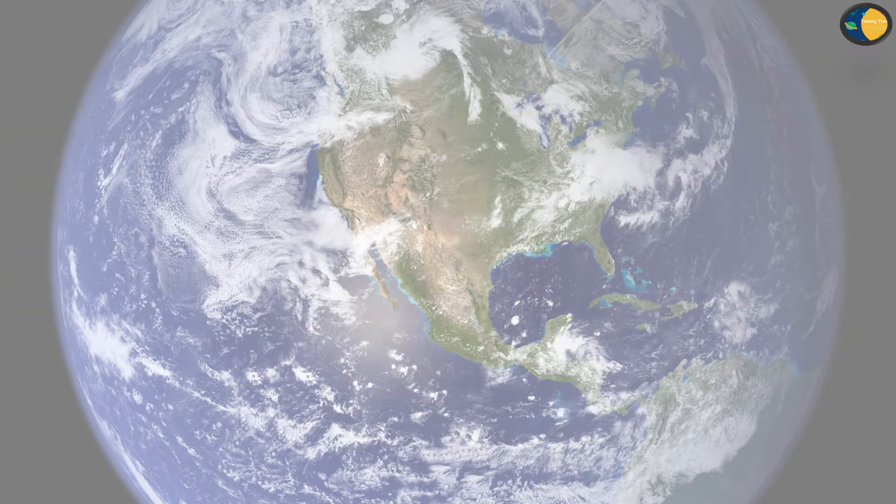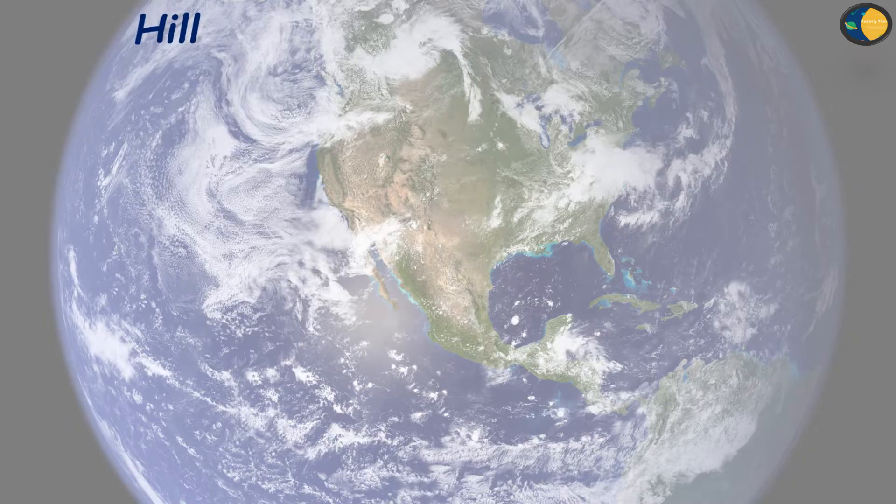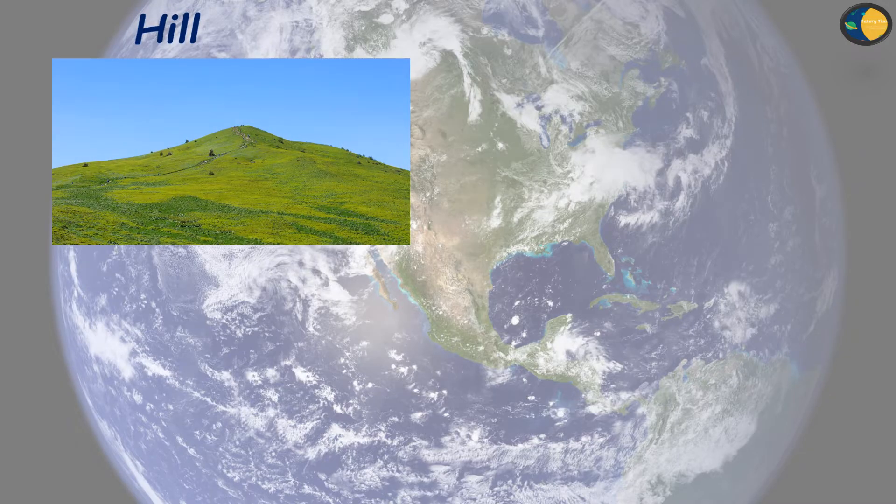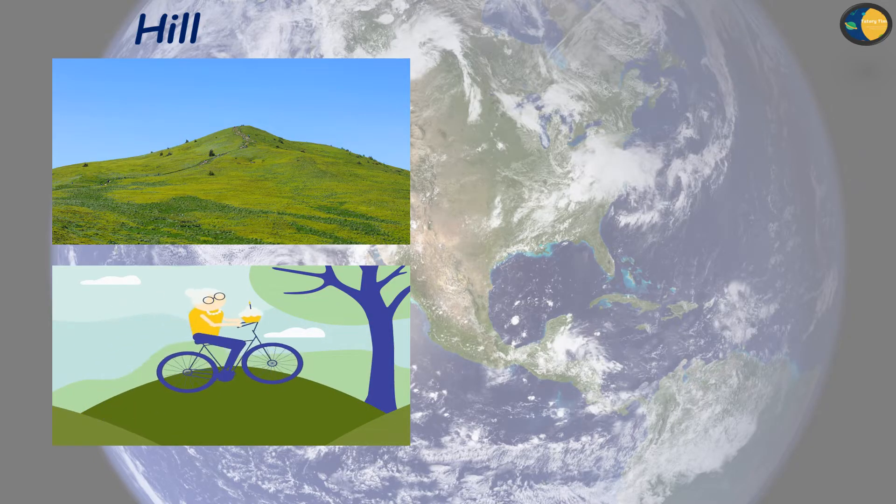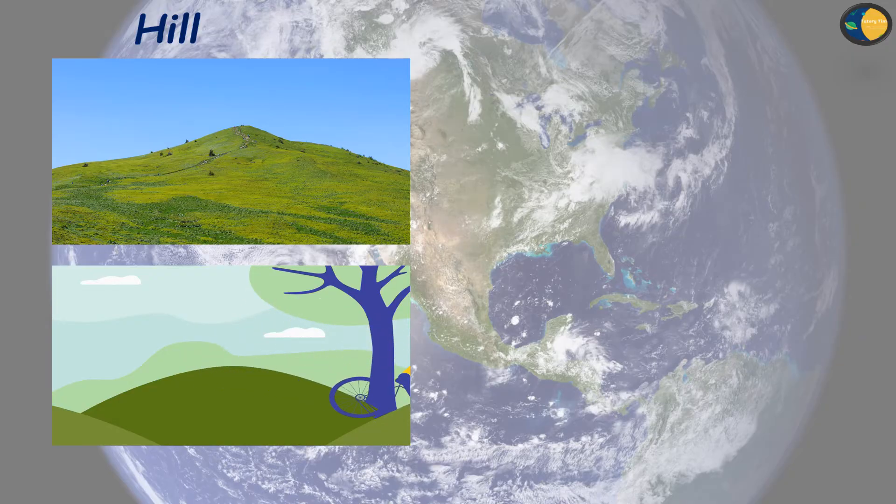Next is hill. A high level land with pointed top is called a hill. Hills are made up of hard rocks. It is difficult to grow crops on hills. And hills are cooler than plains.